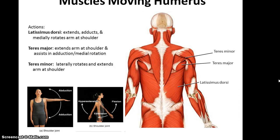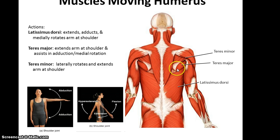Then we have other muscles that move the humerus, including the latissimus dorsi, which is a big broad muscle along the mid and lower back that extends, adducts, and medially rotates the arm at the shoulder. Then we have the teres major, which extends the arm at the shoulder and assists in adduction and medial rotation of the arm. And then superior to that, the teres minor, which laterally rotates and extends the arm at the shoulder.